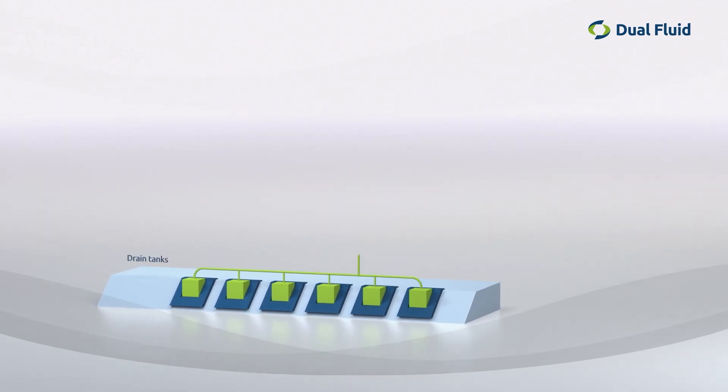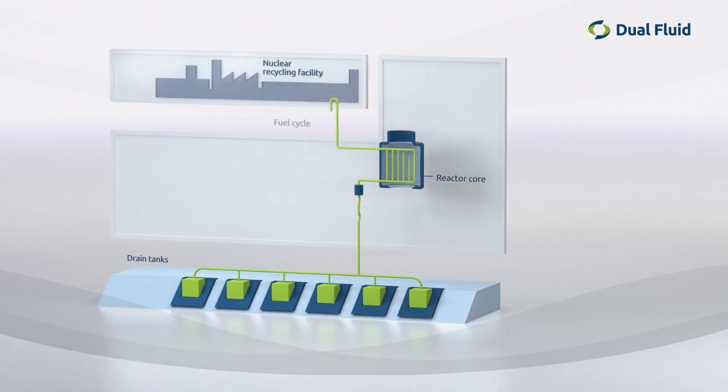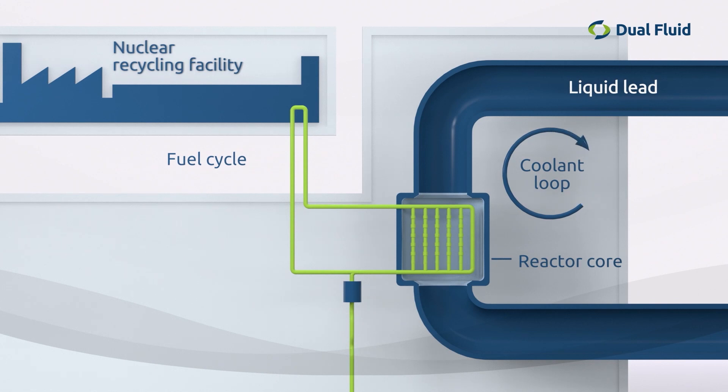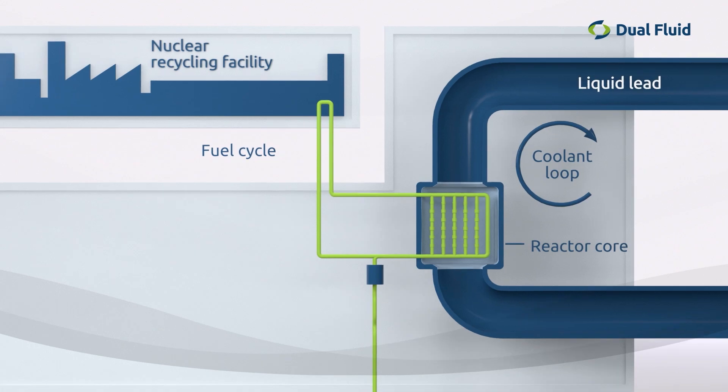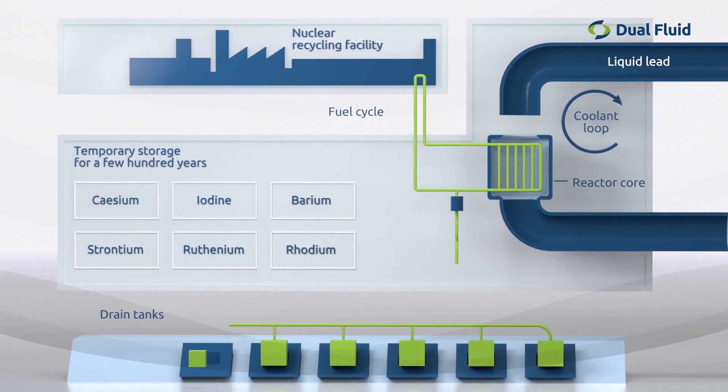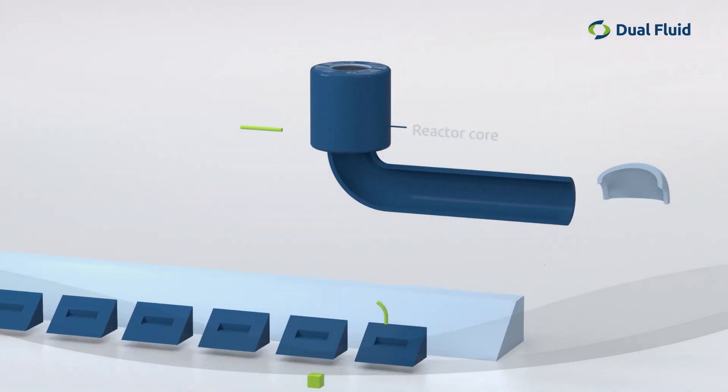Larger dual fluid cores can be directly combined with a recycling plant. The fuel can always be processed locally and fed back into the reactor. The recycling plant can also process nuclear waste from old fuel rods, making a final repository superfluous.